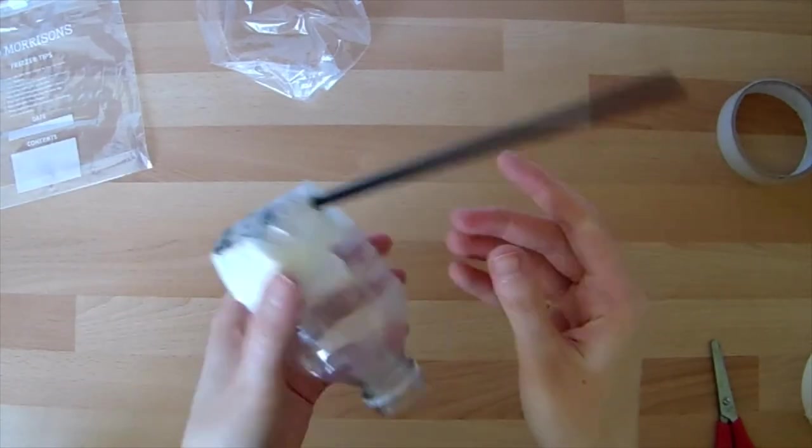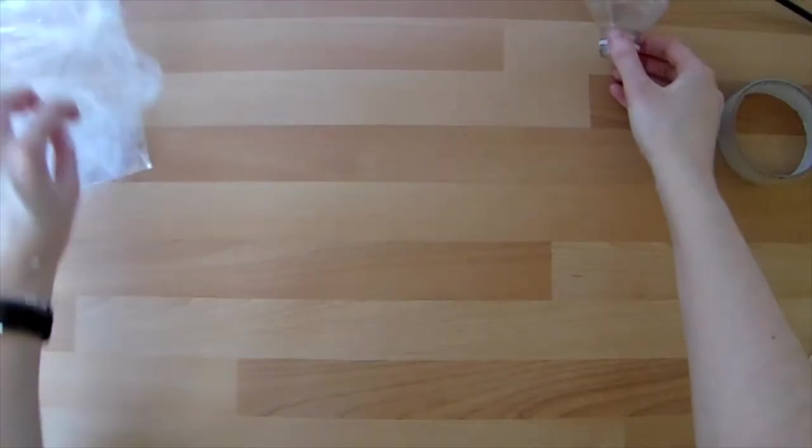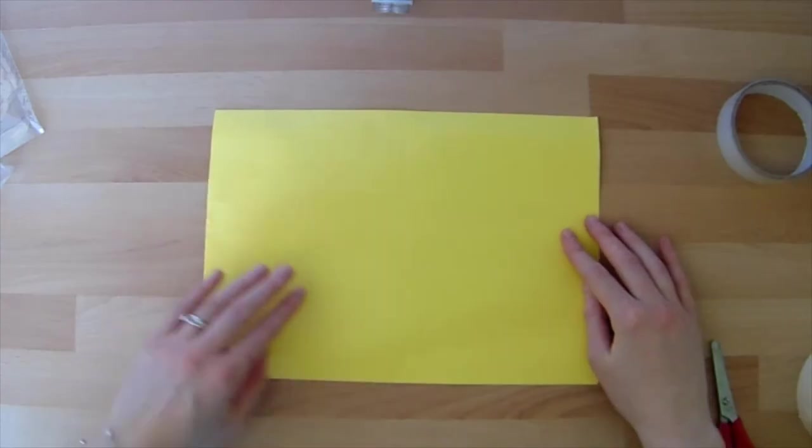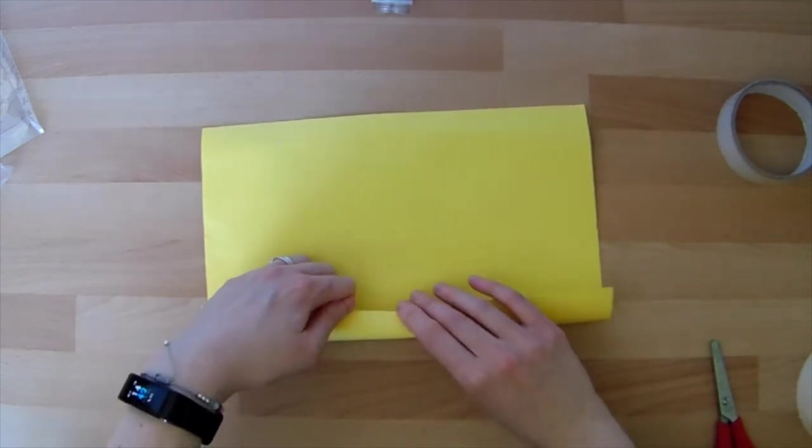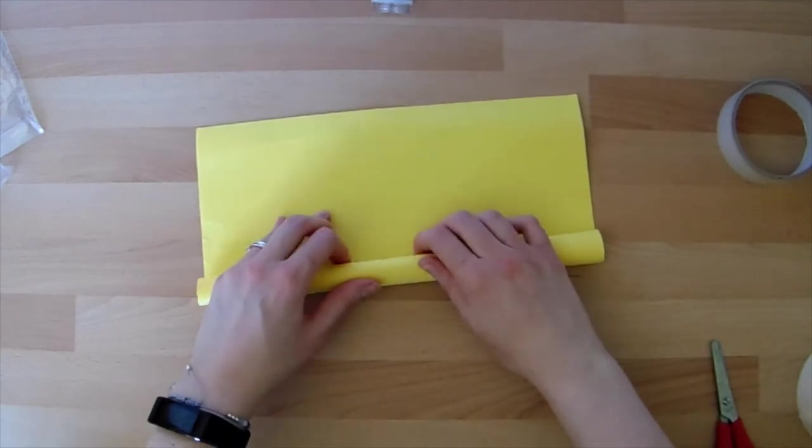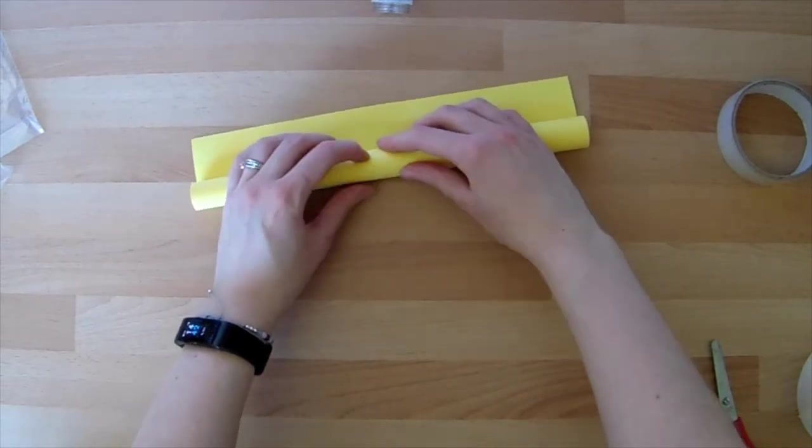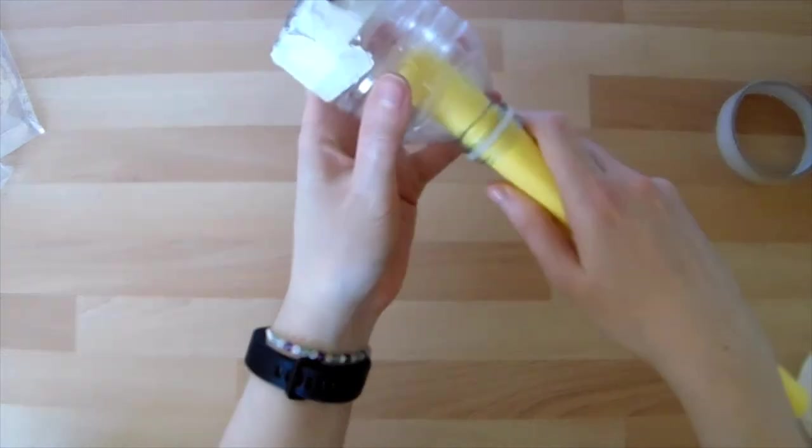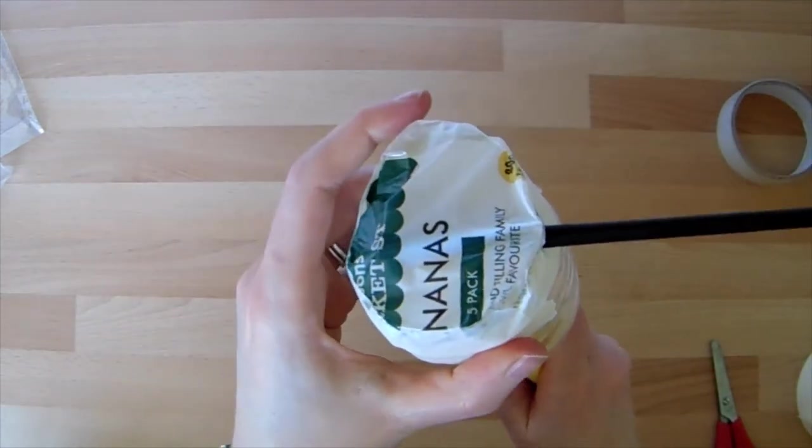So now we need to make the tube to go in the bottom of our bottle. I've got my card here. I'm going to roll my card up. It needs to be rolled tight enough so that it will fit through the opening on our bottle. Slide it through. I'm going to push it all the way up to the top of that plastic. Make sure your straw is not in the way.